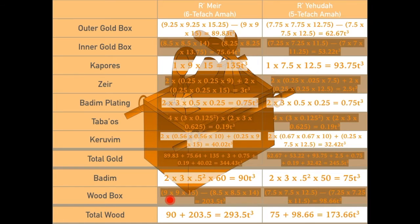According to Rabbi Meir, the wood box would be 9x9x15 tefachim, less than the empty space inside, yielding 203.5 cubic tefachim. A similar calculation for Rabbi Yehuda yields only 98.66 cubic tefachim. The gold boxes were 89.83 cubic tefachim and 75.64 cubic tefachim, respectively, according to Rabbi Meir, and 62.67 cubic tefachim and 53.22 cubic tefachim, respectively, according to Rabbi Yehuda. Note that the wooden box is larger than either of these numbers, according to either opinion. That is not a mistake.